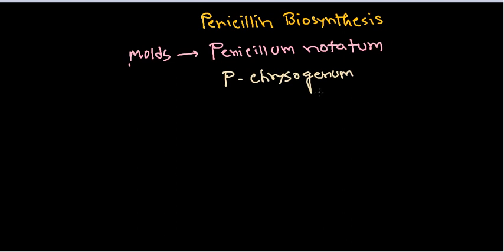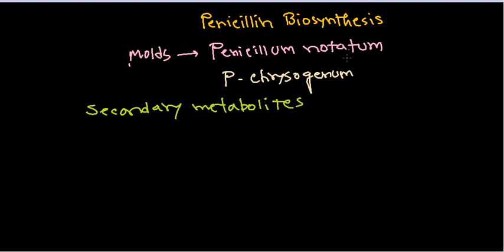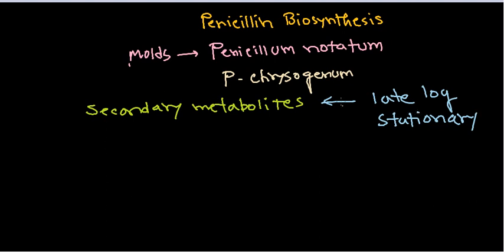Penicillin is an antibiotic, and antibiotics are simply termed secondary metabolites. Secondary metabolites are generally produced at the stationary phase or late log phase of the life cycle of bacteria or fungi. In this case, penicillin is produced from molds and is normally produced at the late log phase of their growth cycle.